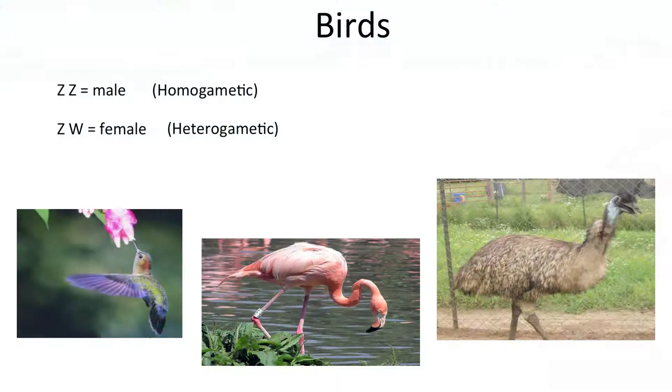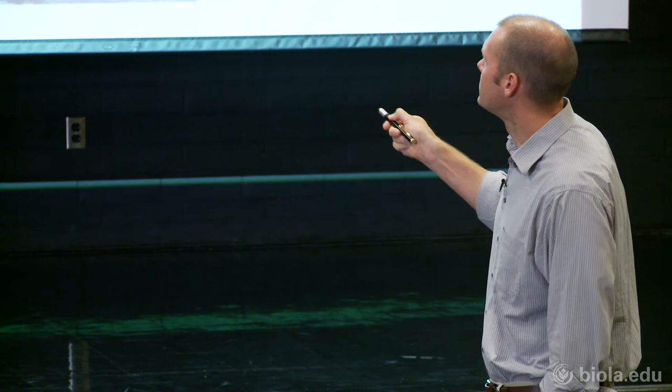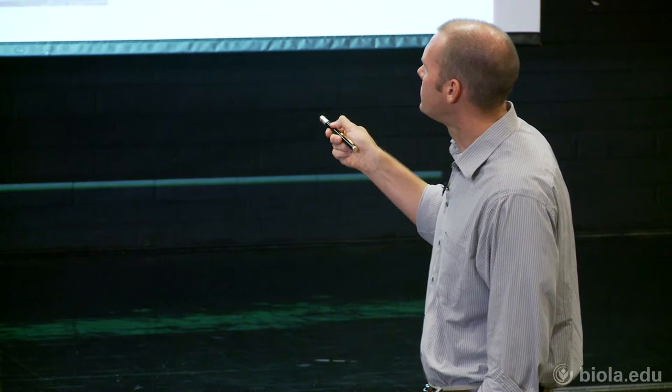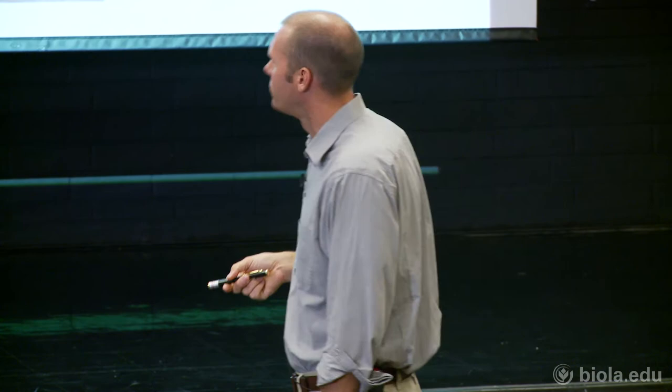In birds, sex is chromosomally determined, but the naming is different. In mammals, the homogametic sex is female (XX). In birds, the homogametic sex is the male, designated ZZ, while females are ZW. The Z chromosome is typically the larger one and W is smaller. The defaults can be the same as the XY system, just flipped — with proportions skewing in the opposite direction.